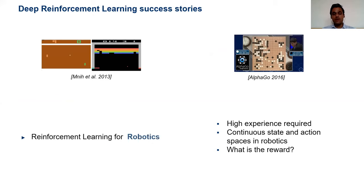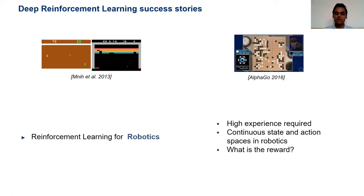Still, recently we have seen some success stories of deep reinforcement learning, mostly in games. In particular, the work on Atari games showed quite nice performance — just receiving an image as input (what a human would see on screen), the agent learned to perform actions, achieving human-level performance in playing these games after a reasonable amount of training. And as I mentioned, AlphaGo — the program that used reinforcement learning and Monte Carlo search — beat the world's best player in the game of Go, which is a very complex game.